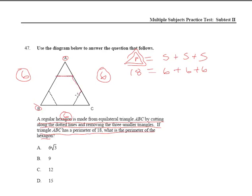Let me draw that in here carefully. Remember that all sides are going to be equal. Look at AB — since we've cut off these little triangles, we know that this line is 2, this side is 2, and this side is 2. But we are after the sides of the hexagon. So each side of the hexagon is 2 — that side's 2, this side's 2, that side's 2, that side's 2, this side is 2, and that side's 2.